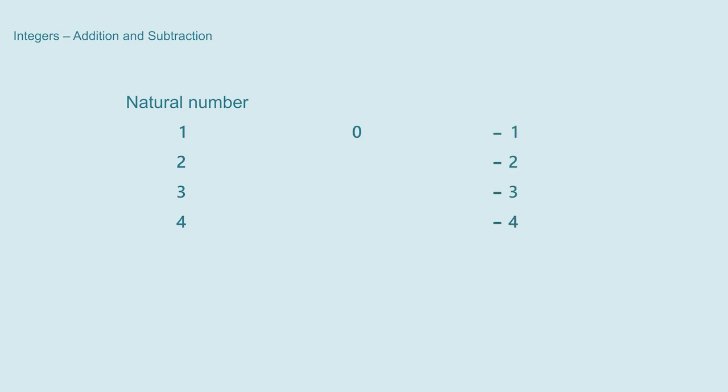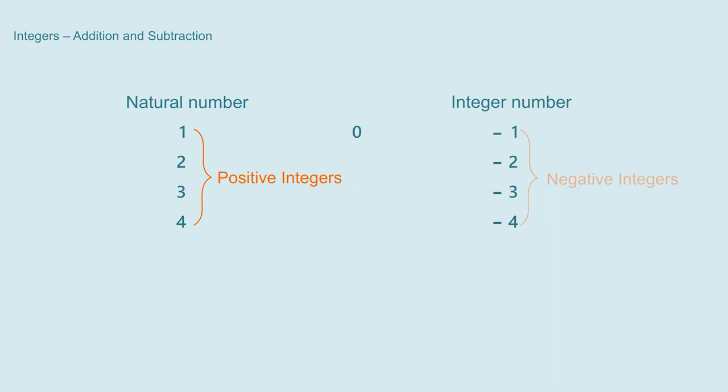All these numbers are called integer numbers. Among them, 1, 2, 3, 4 are called positive integers and minus 1, minus 2, minus 3 are called negative integers. We have seen that the sum of natural numbers is again a natural number but their subtraction is an integer.